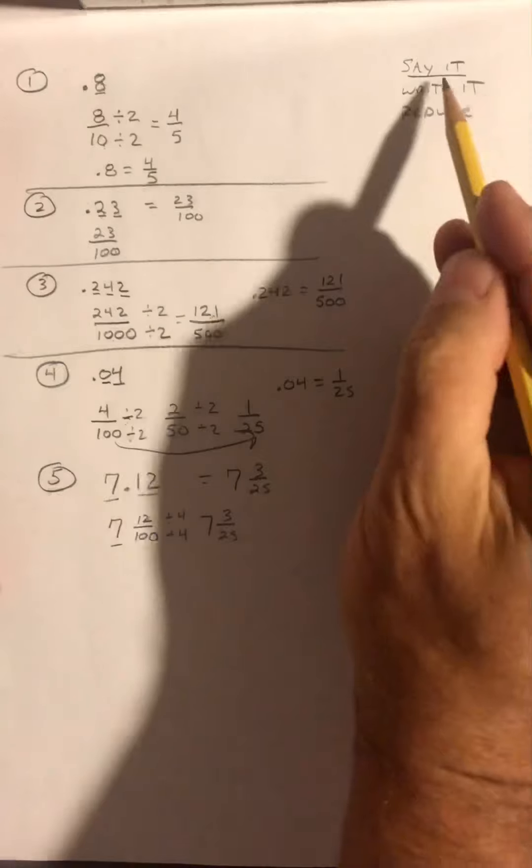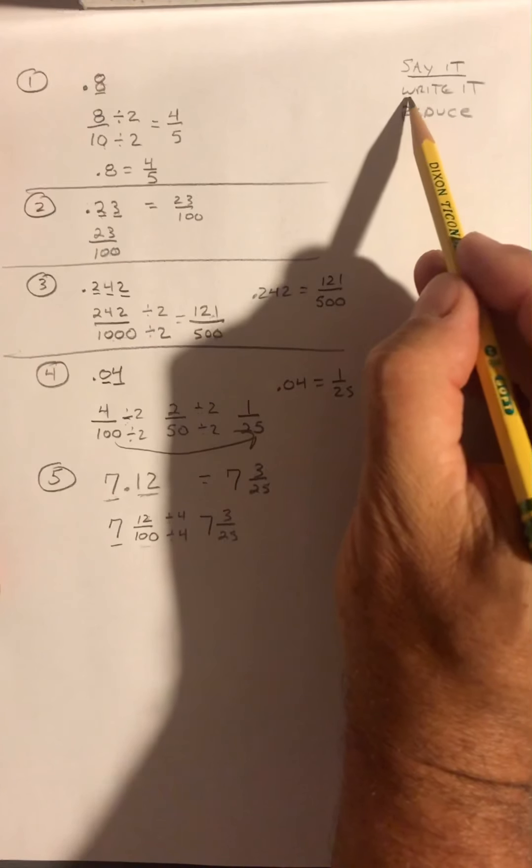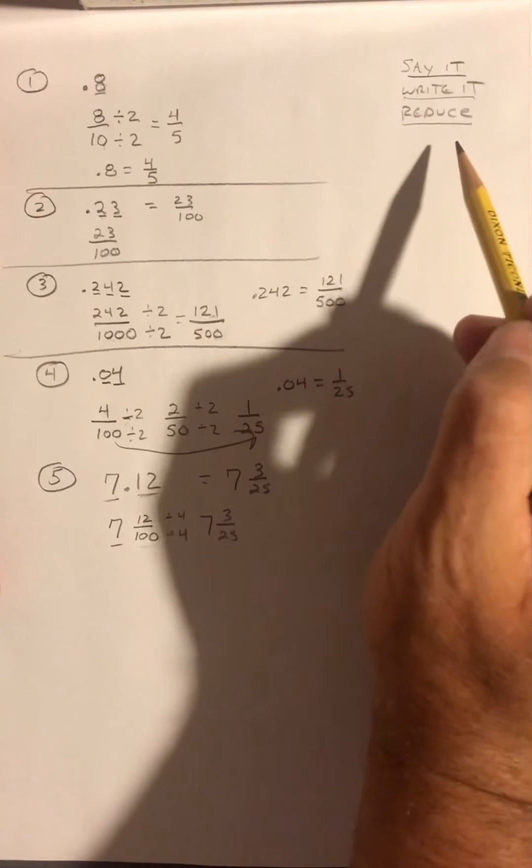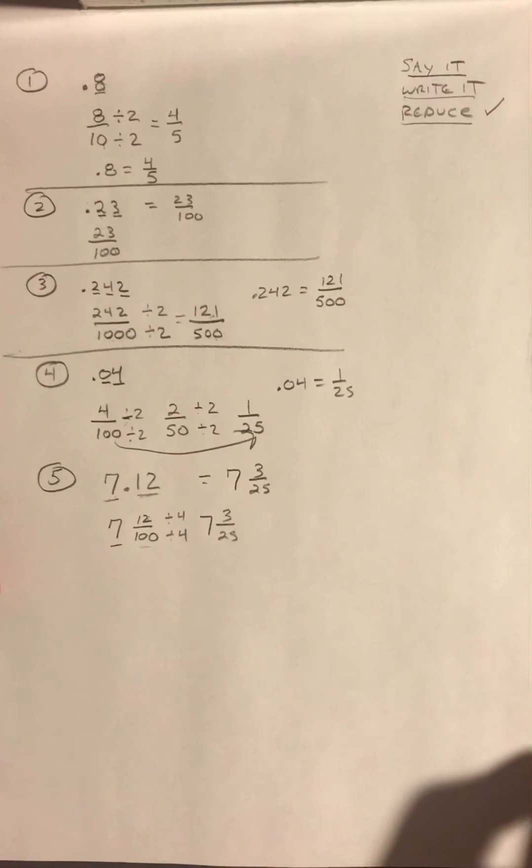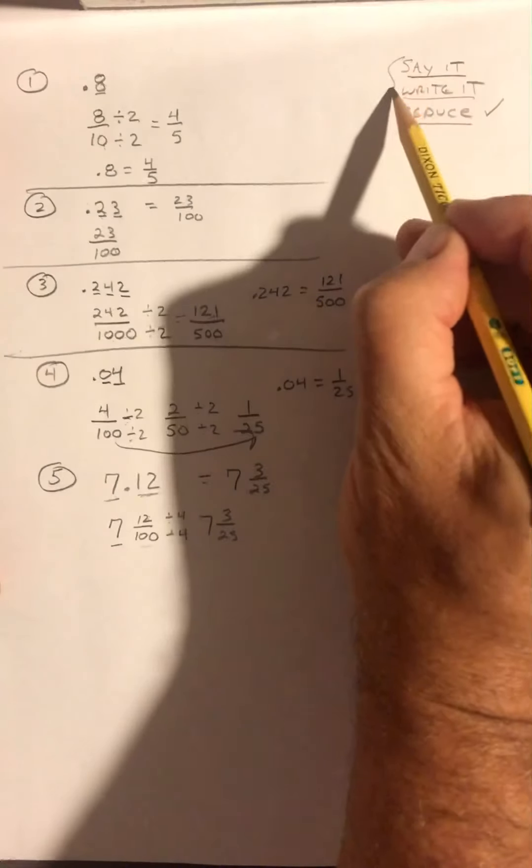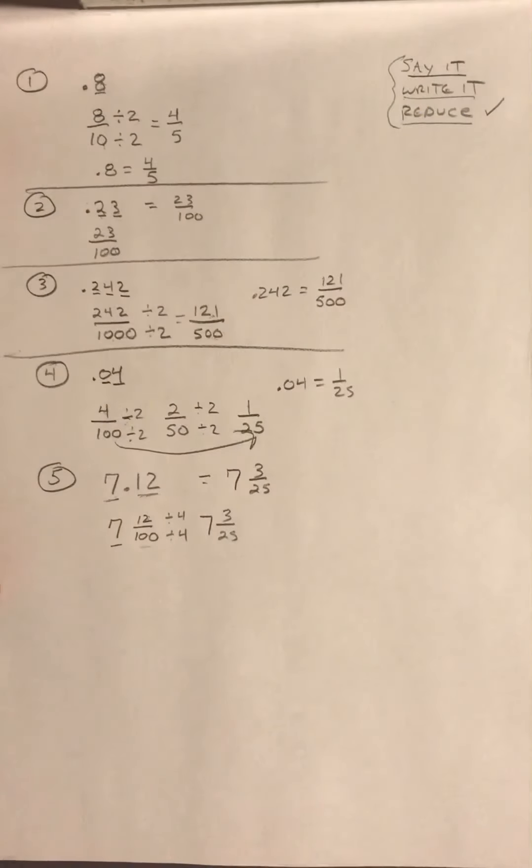Notice in every one of these, I said it, and then I wrote it in fractional form the way I said it, and then I reduced it. Occasionally, the reduction is not going to be available because it can't be reduced, but a lot of times it will. So you have to do all three of those steps. Thank you for watching.